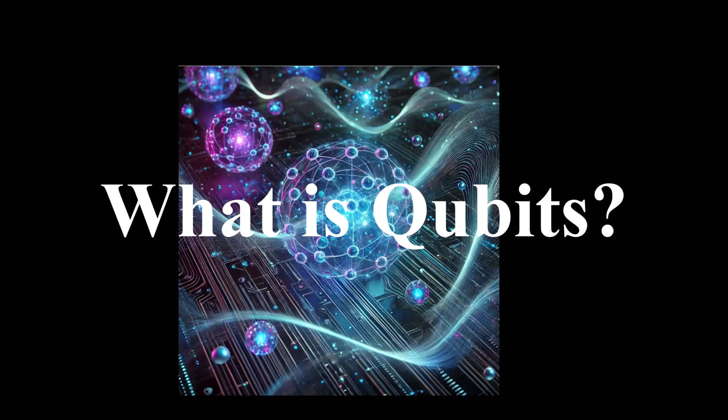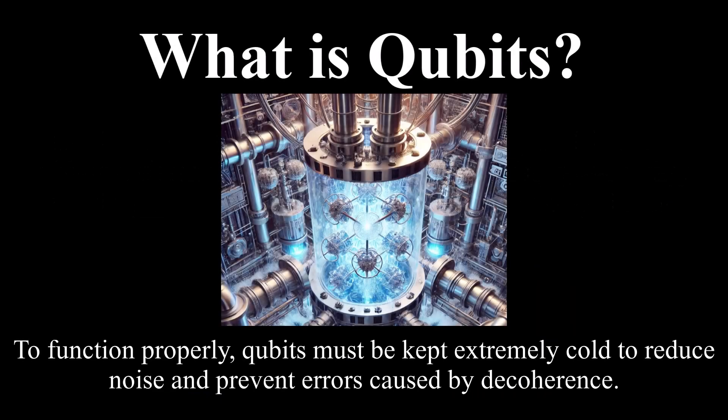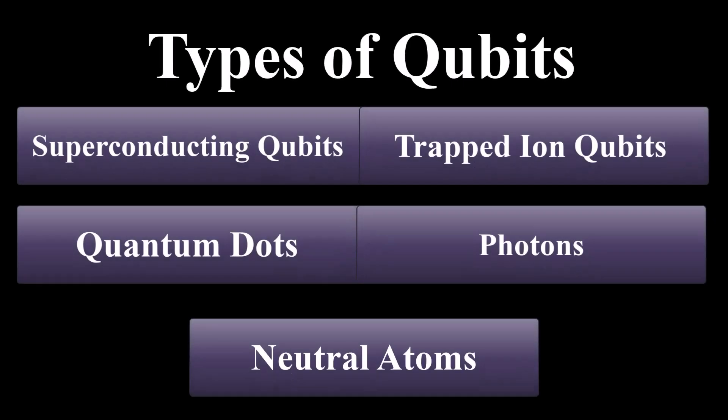So what exactly are qubits and how do they work? Qubits are created by manipulating quantum particles like protons, electrons, or atoms, or by engineering a system that mimics quantum behavior, such as superconducting circuits. To function properly, qubits must be kept extremely cold to reduce noise and prevent errors caused by decoherence. Different types of qubits are used in quantum computing today, each with unique strengths.